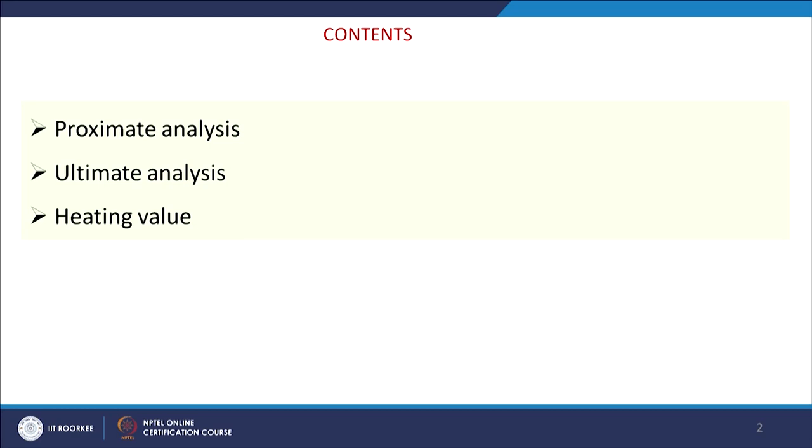So in this class, we will see what are the different methods that can be used to measure the properties of coal, like moisture content, fixed carbon, volatile matter content, and what is the carbon, hydrogen, nitrogen, sulfur, oxygen present in coal — and ultimately we will see how the heating value is determined. The contents of this class are proximate analysis, ultimate analysis, and heating value determination. Now we will see what is proximate analysis.